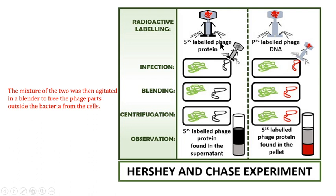Bacteriophages are made up of two things: protein and DNA. By labeling each component, you can identify which part of the bacteriophage enters the bacterial cell and which does not. To do this, you choose an element present only in protein for protein labeling — one not present in DNA — and an element present only in DNA for DNA labeling.